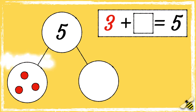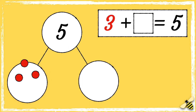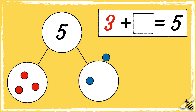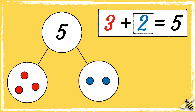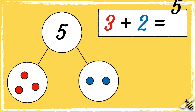We can count on from three until we reach five. Three, four, five. How many blue spots did we add? We added two blue spots so two is the missing part. Three add two equals five.